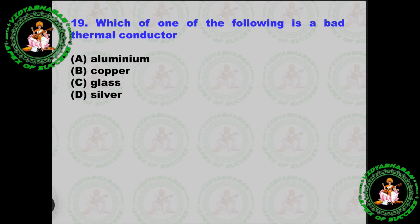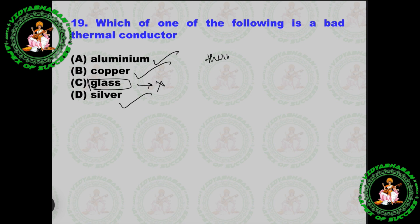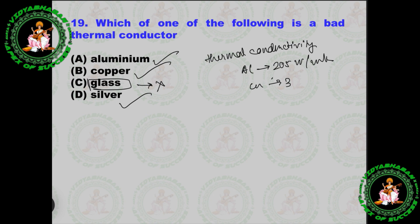Next question: Which one of the following is a bad thermal conductor? The answer is glass. Aluminum, copper, and silver are all good conductors of heat. Thermal conductivity values: aluminum is 205 watts per meter-kelvin, and copper is 385 watts per meter-kelvin.